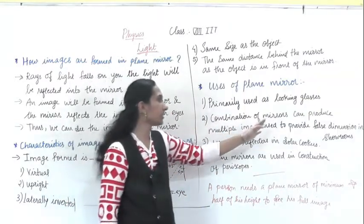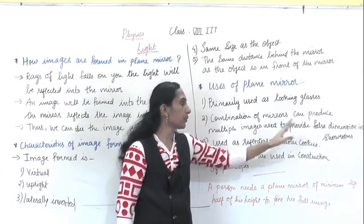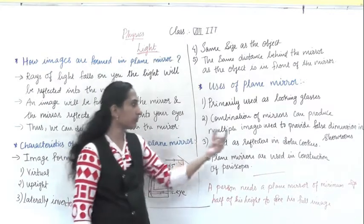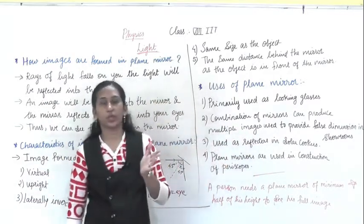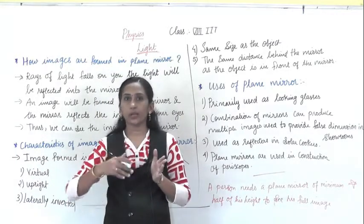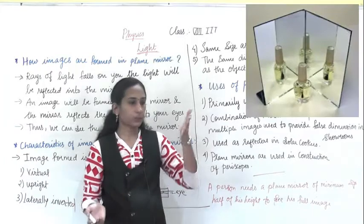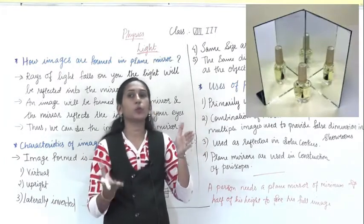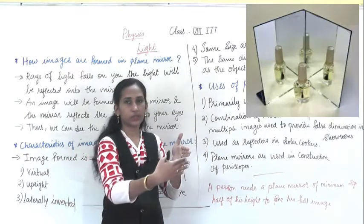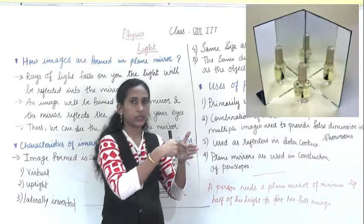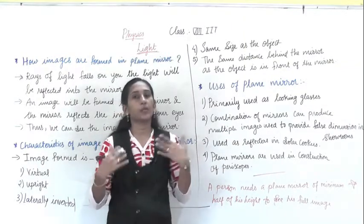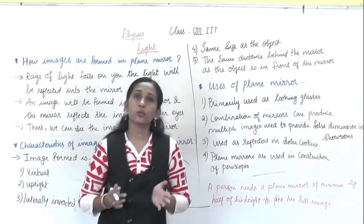Second, a combination of mirrors can produce multiple images, used to provide false dimension in showrooms. There is the concept of multiple images, meaning multiple reflections. When a ray falls on one mirror, it can reflect multiple times. If you keep two mirrors facing each other, light falls on the first mirror, reflects to the second mirror, and reflects back again — many types of reflections can occur.